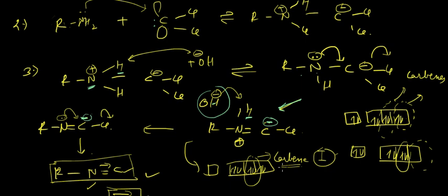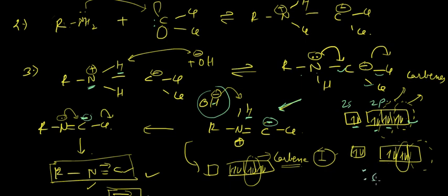Looking at the orbital configuration of the carbon atom: we have 2s and 2p orbitals. The four electrons from carbon itself are in the orbitals, and the remaining electrons were filled from bonds with nitrogen and the two chlorines. In the pz orbital, there is one extra electron from the negative charge acquired on carbon, giving it a complete octet.